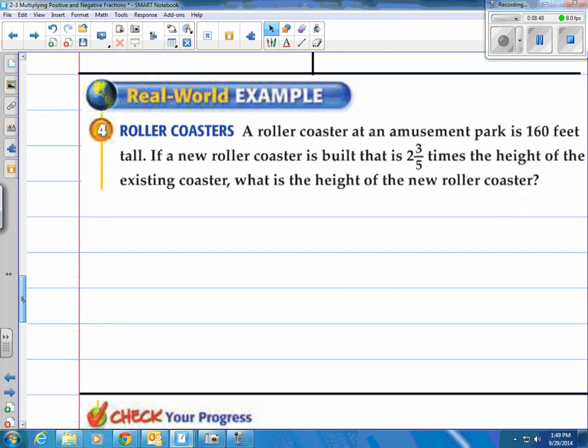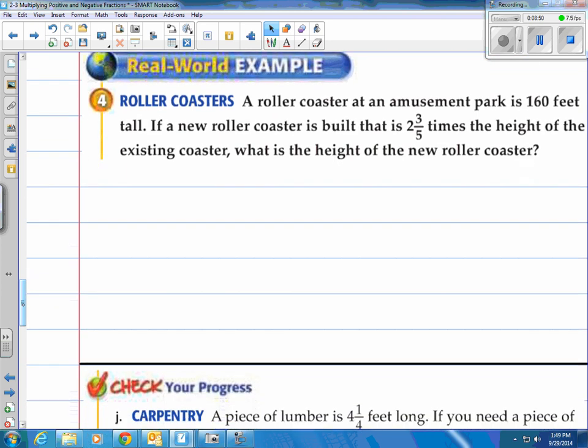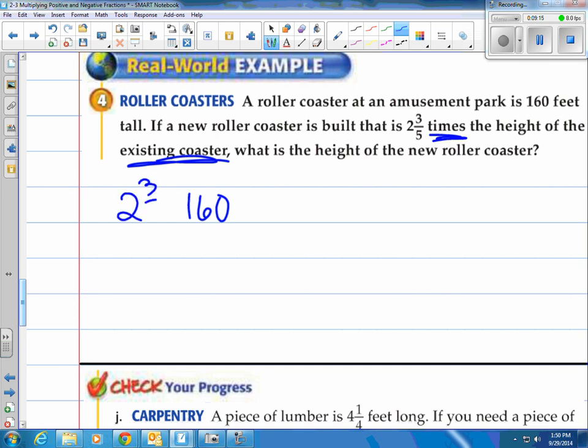All right. We've got a real-world example number 4, roller coasters. A roller coaster at an amusement park is 160 feet tall. Now, if a new roller coaster is built that is 2 and 3/5 times, I like that. It's easy to see, times the height of the existing coaster. What is the height of the new roller coaster? Well, the existing roller coaster is 160, and the new one's going to be 2 and 3/5. So I'm going to say 2 and 3/5 times the existing coaster. 2 and 3/5 times, that's your dot, existing coaster, which is 160 feet.